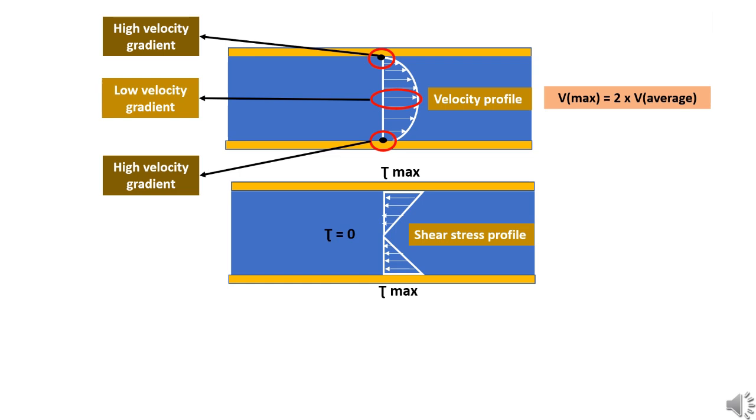This velocity gradient along with the fluid viscosity will enable us to determine the shear stress. This shear stress or shear force is what resists the fluid flow and results in energy loss. The Newton's law of viscosity is used for calculation of shear stress. The shear stress variation is linear with maximum shear stress on the pipe walls.